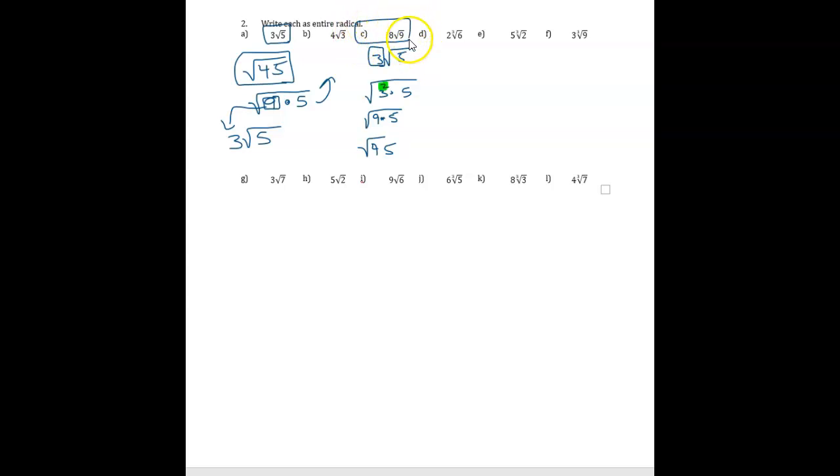Next one, we'll look at C. So you can try that one yourself first. You can pause the video. So we have 8 times the square root of 9. So the process is take the coefficient right underneath the radical sign. It's square root, so we square it, multiply it to 9.